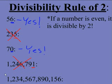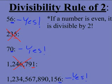Let's look at the next one. This is kind of a challenge — we've got a much bigger number. 1,234,567,890,156 ends in 6, so I know that it's simply even. And all even numbers are divisible by 2, so this number is also divisible by 2. So, the rule just says that if a number is even, it's divisible by 2.